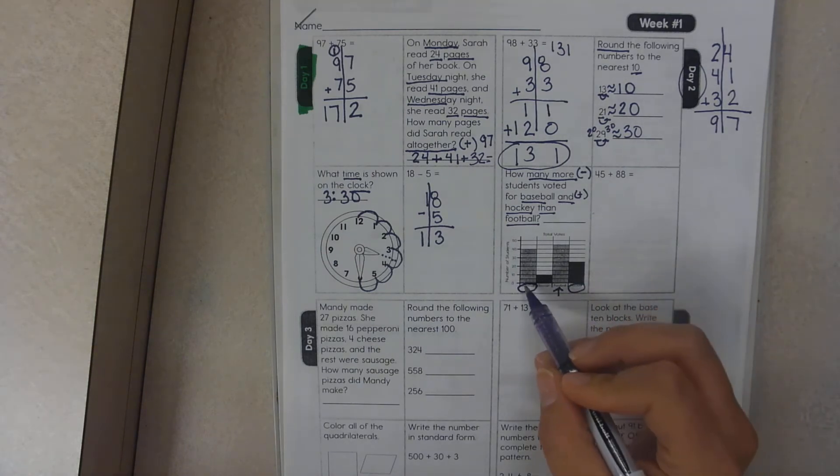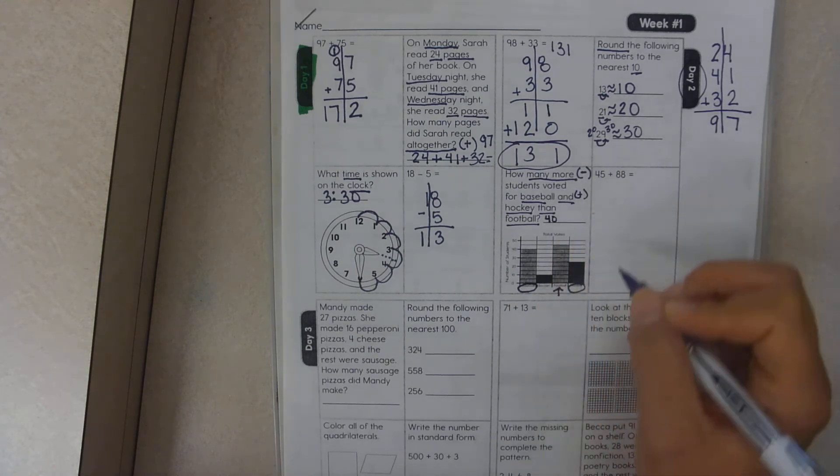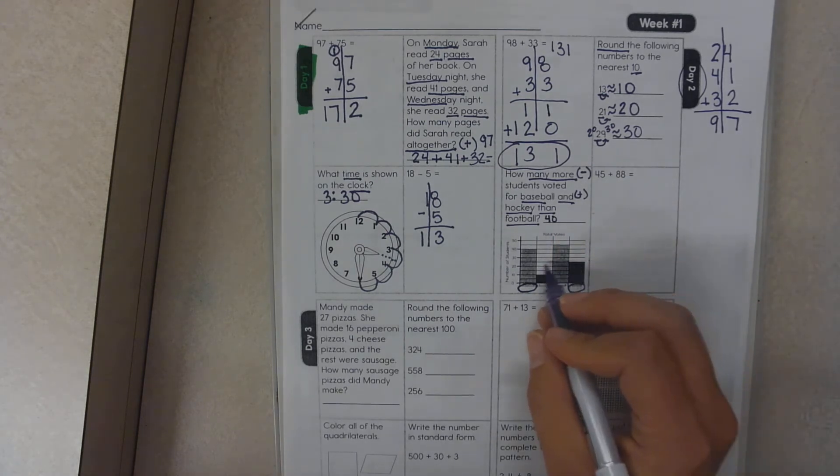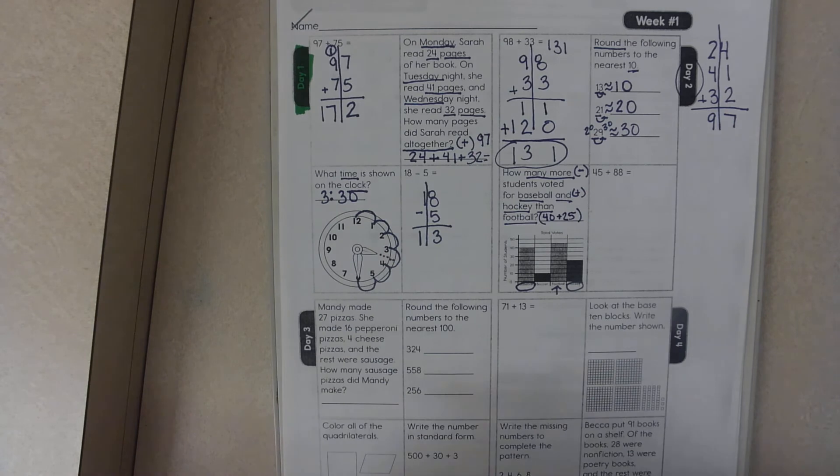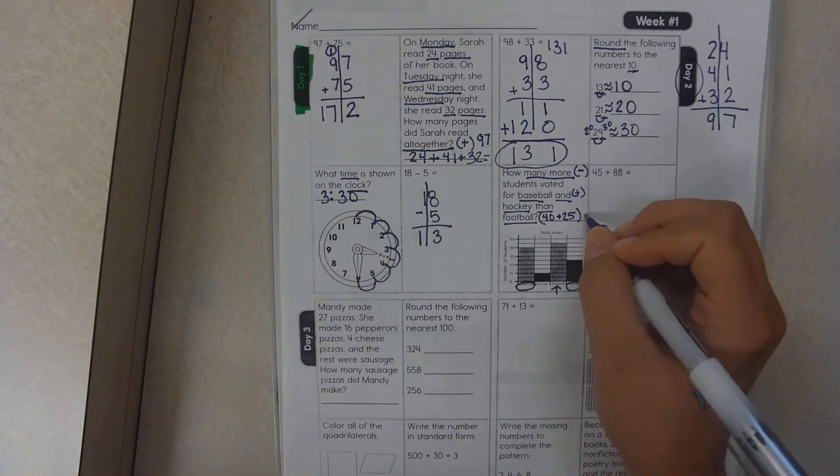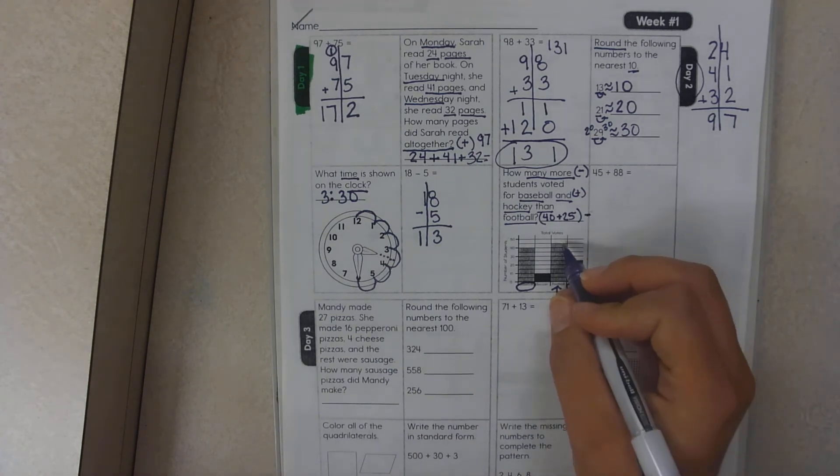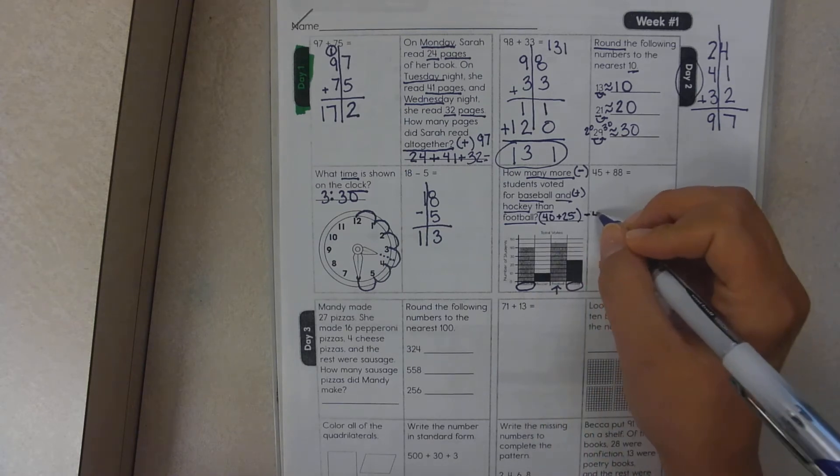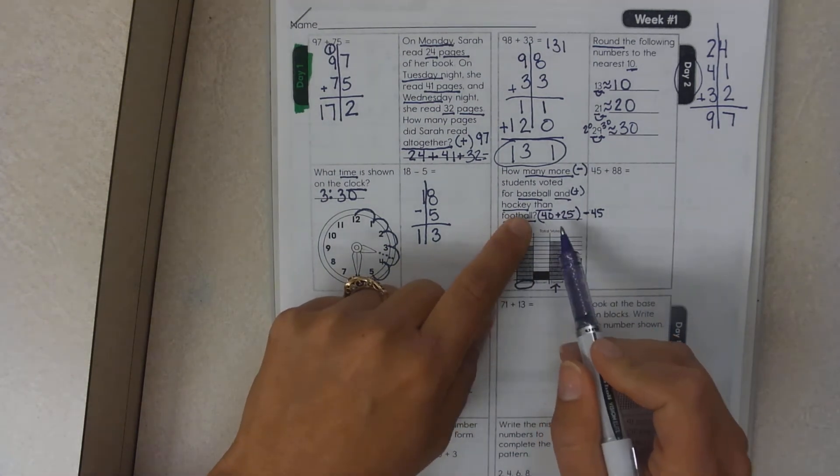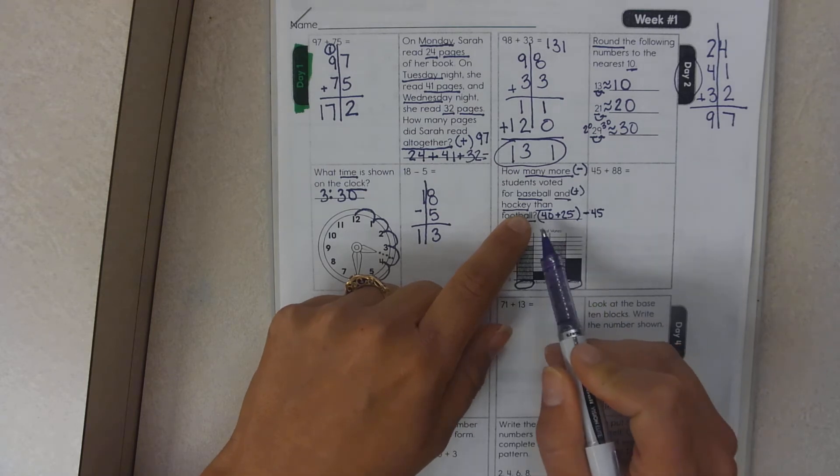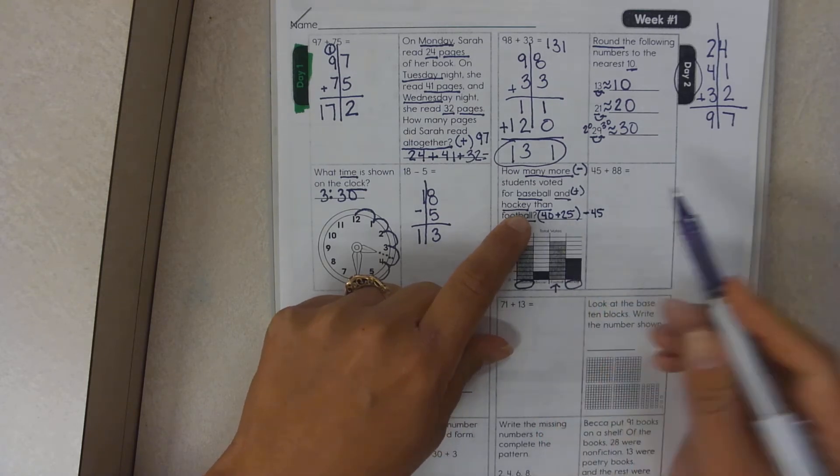Okay, so I go up. Baseball is 40. Hockey is 25. So I'm going to add these two together. Then I'm going to subtract football, which is 45. Now, I can do this mentally. I do not want you to do this mentally yet. 40, 25. The answer is 65.